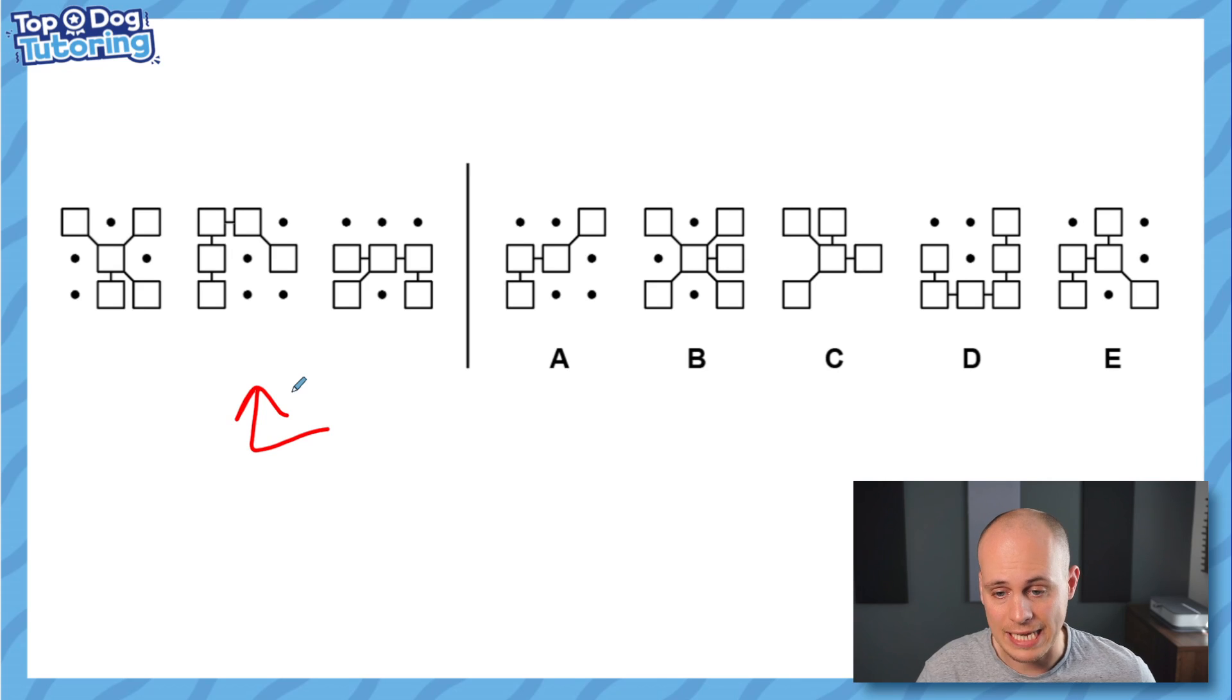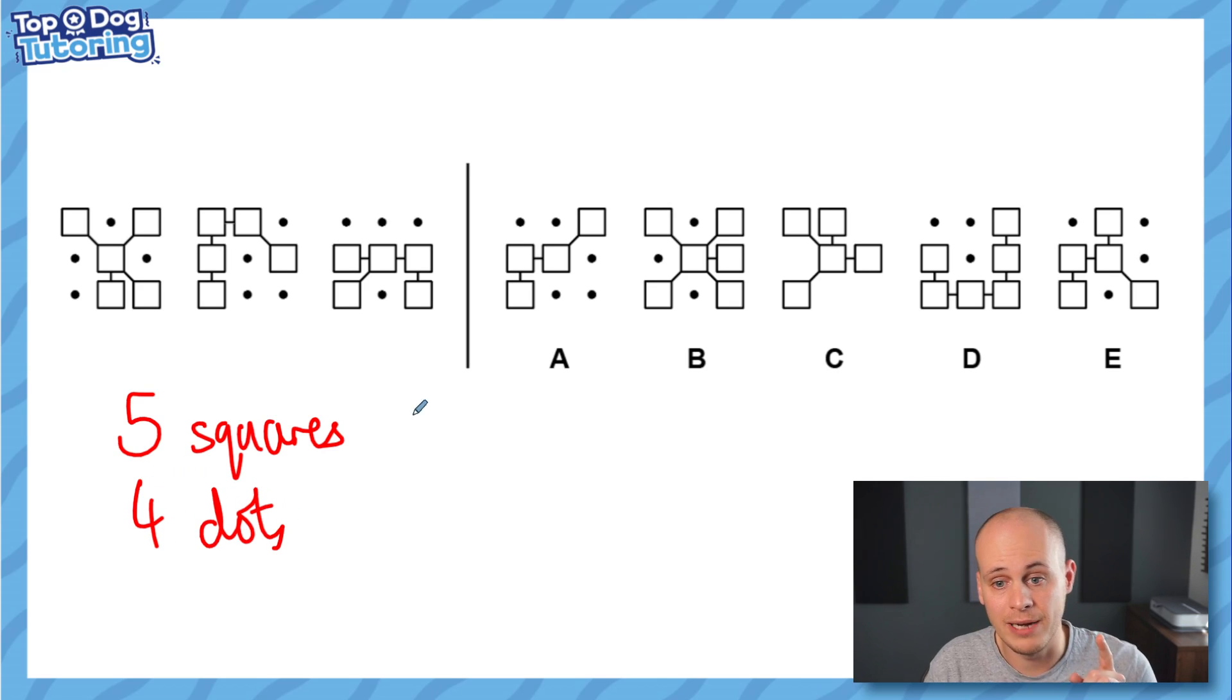Okay here we go guys. Are you ready? So the similarities are as follows. In the three figures on the left all of them have five squares and four dots. Now what doesn't matter about them is the way they're all joined up these squares because on the left we've got a square in the middle where everything's coming out from the center. The next one it's kind of like a train they're all just joined up one to the other and the last one's a bit of a mixture of them so that doesn't matter it just matters that there's five squares four dots.